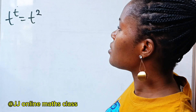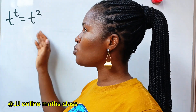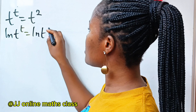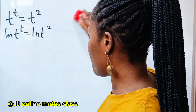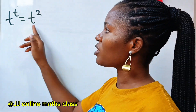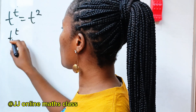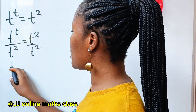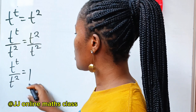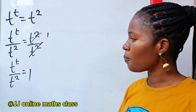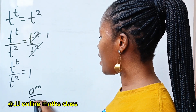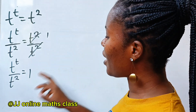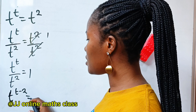Let's show that by working through it. To save ourselves some time, let's first divide both sides of this equation by t to the power of 2. So we have t to the power of t divided by t to the power of 2, which equals 1. Remember that a to the power of m divided by a to the power of n is equal to a to the power of m minus n. So we can write this as t to the power of t minus 2 is equal to 1.